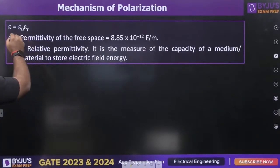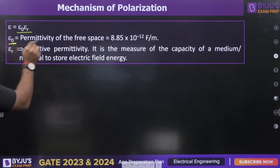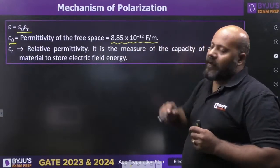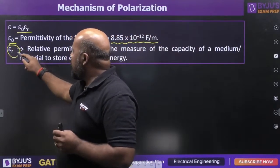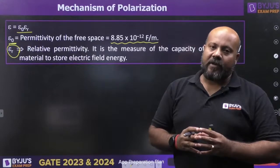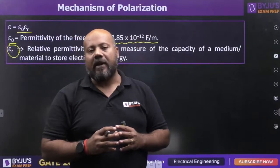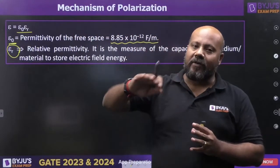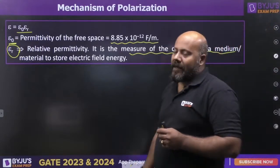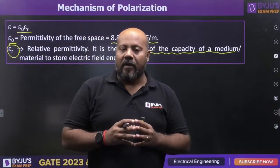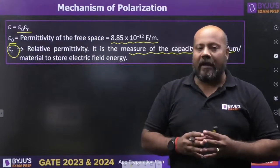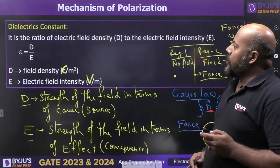The dielectric constant is ε = ε₀εr, where ε₀ is the permittivity of free space (8.85 × 10⁻¹² F/m) and εr is the relative permittivity — a dimensionless ratio. εr gives a measure of the capacity of the medium to store electric field energy. A material with a higher dielectric constant stores a greater amount of electric field energy.